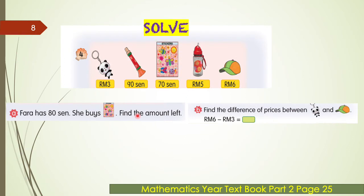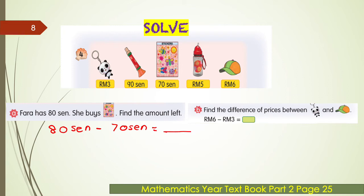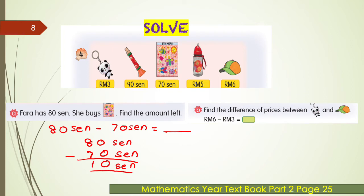Okay class, look at example four. There are many items with their prices shown. Look at part A: Farah has 80 cents and she buys stickers. Find the amount left. Stickers cost 70 cents, so write the number sentence: 80 cents minus 70 cents. Write in standard written method — 80 cents minus 70 cents. 0 minus 0 is 0, 8 minus 7 is 1, so the amount left is 10 cents.